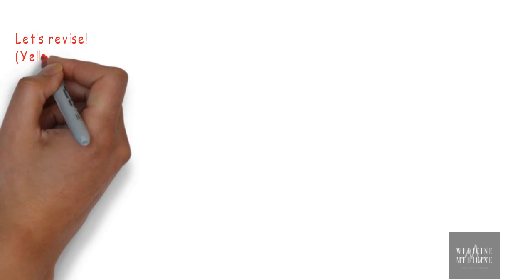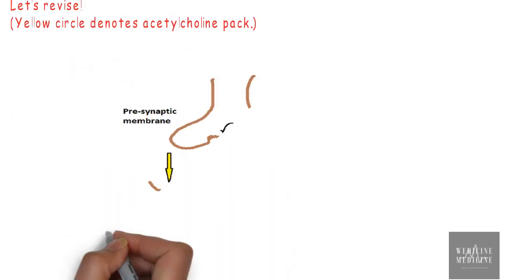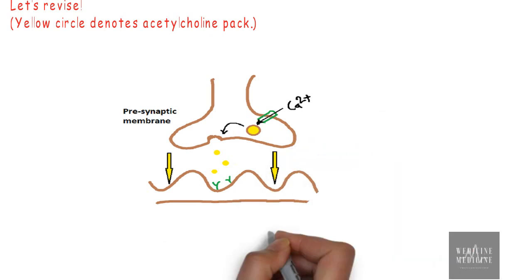Let's revise. Here you can see presynaptic membrane with voltage-gated calcium channel. The calcium is responsible for mediating exocytosis of acetylcholine pack by fusing the membrane of acetylcholine pack with presynaptic membrane, thereby releasing acetylcholine into neuromuscular junction.